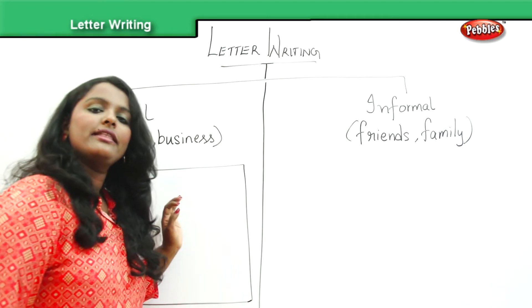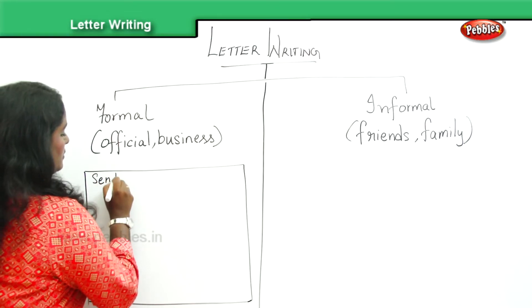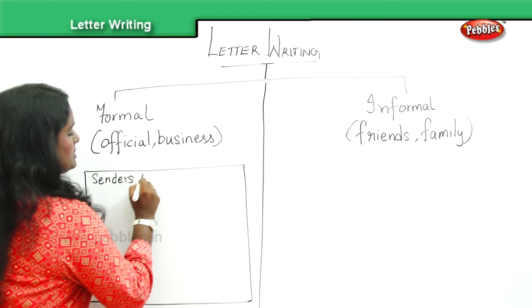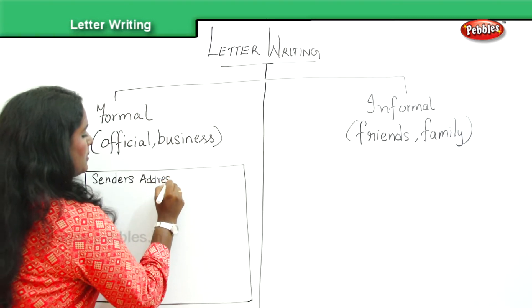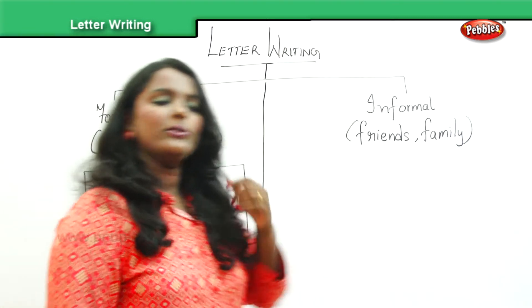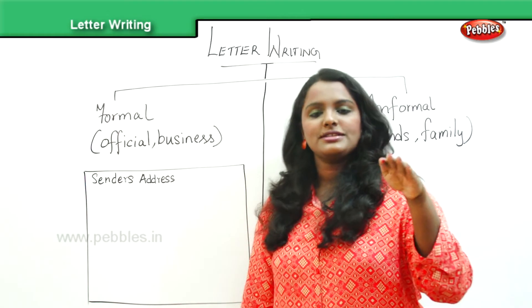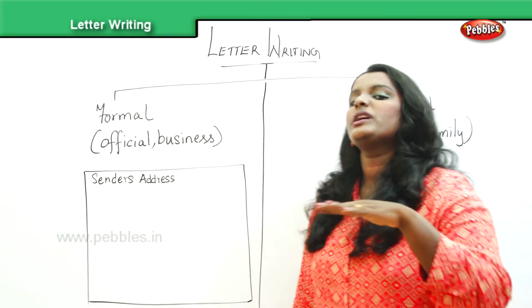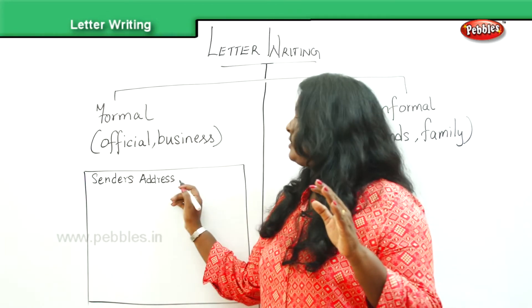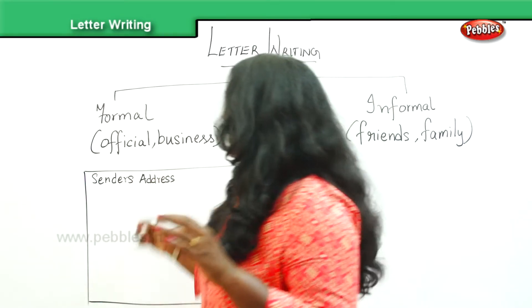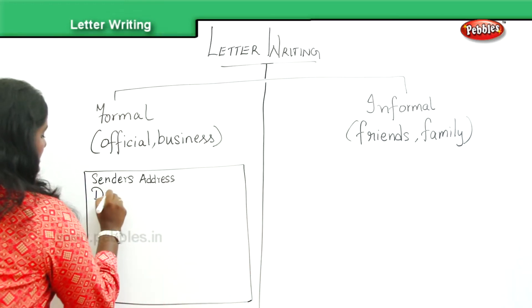You begin the letter with the sender's address. In earlier days we used to have a 'from' address and a 'to' address, but those are now outdated. We will stick to the sender's address, and following the sender's address you write the date.